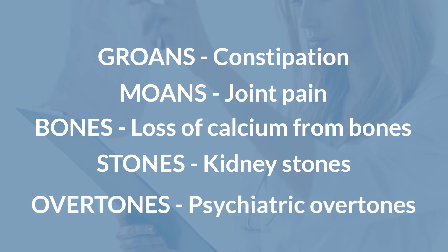Overtones is the last one. What you're going to see as the nurse are psychiatric changes — things like confusion and depression. Anytime you see those things with an acute onset, take a look at your patient's calcium.